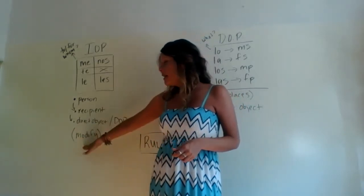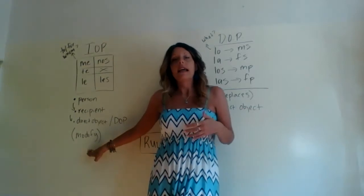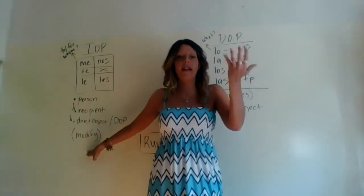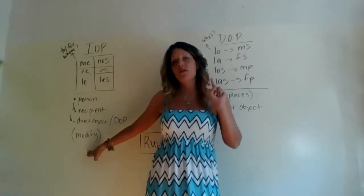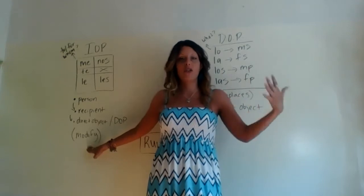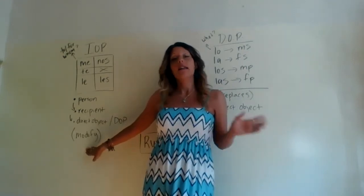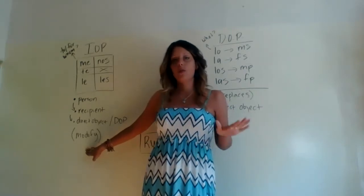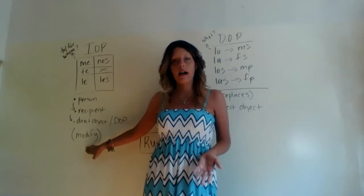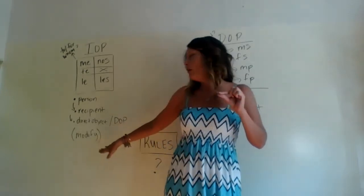This is what makes IOPs different in English and Spanish: the word 'modify.' In English, we replace the recipient in our sentence with a pronoun that is an indirect object pronoun. In Spanish, we do not do that. Indirect object pronouns in Spanish modify that person who is the recipient of the direct object or the DOP. The IOP in Spanish does not replace the recipient — it can often look redundant because it is, but it is grammatically necessary.